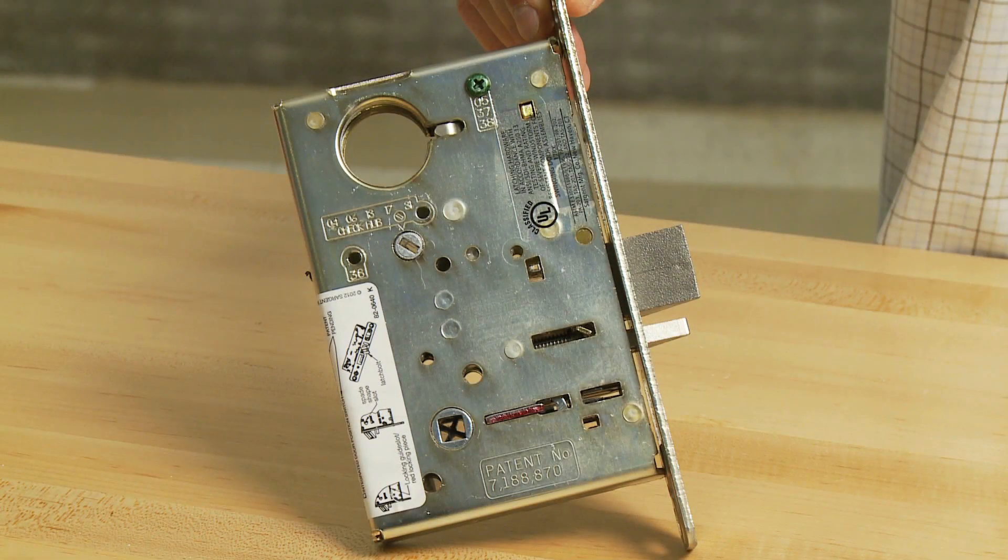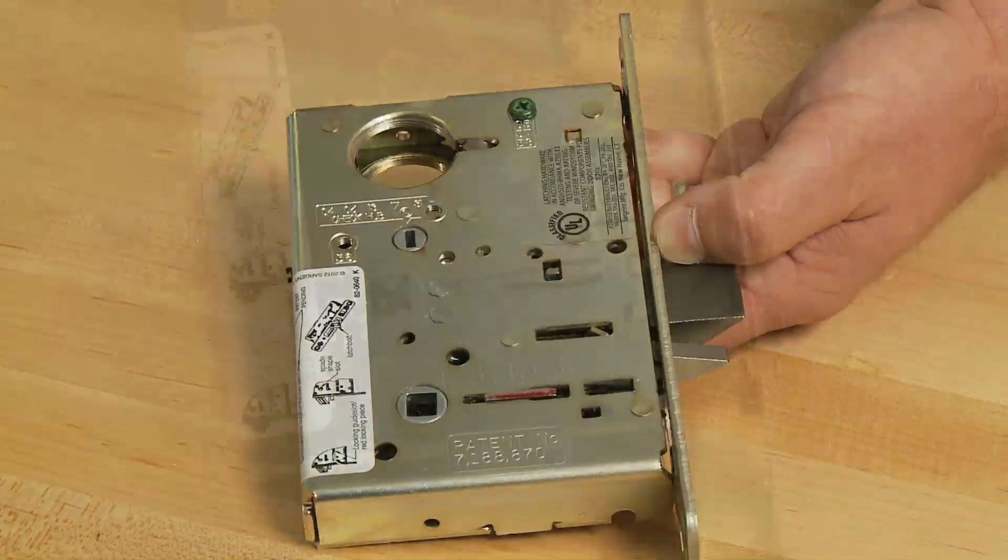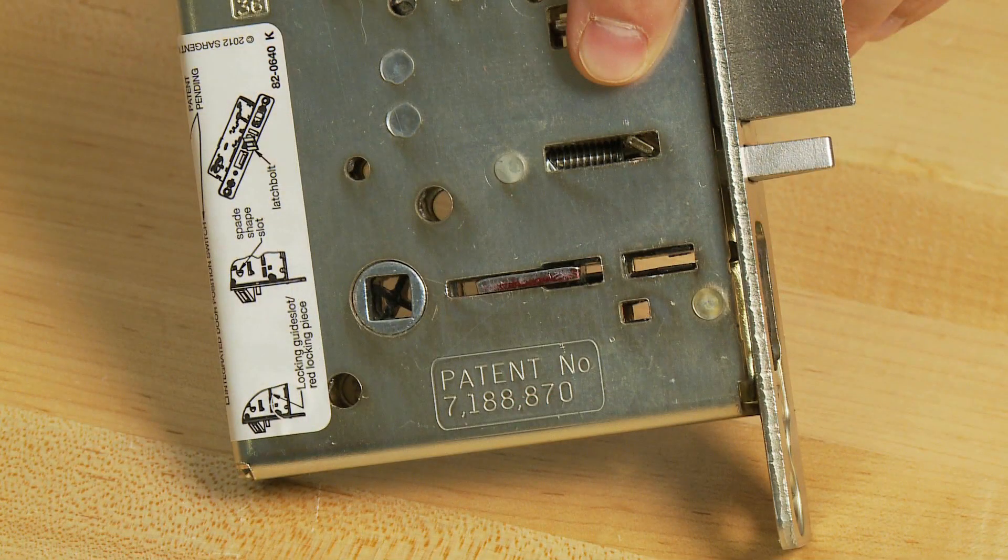How to Change Mortise Lock Handing. Rotate the hub to unlock the locking slide. Position the lock body so the red surface of the locking piece is visible.